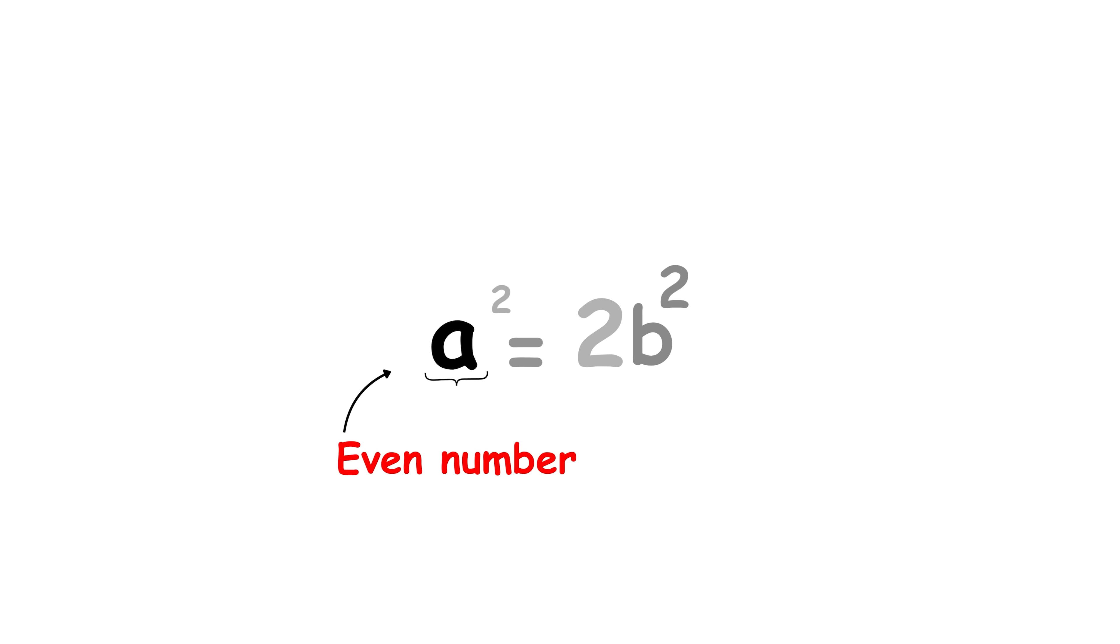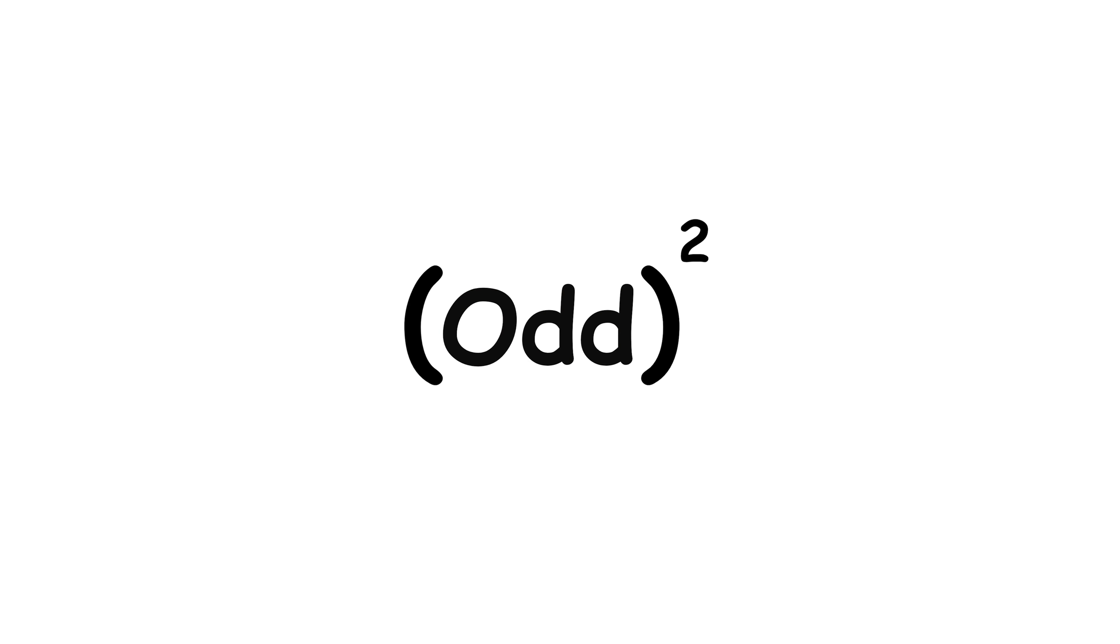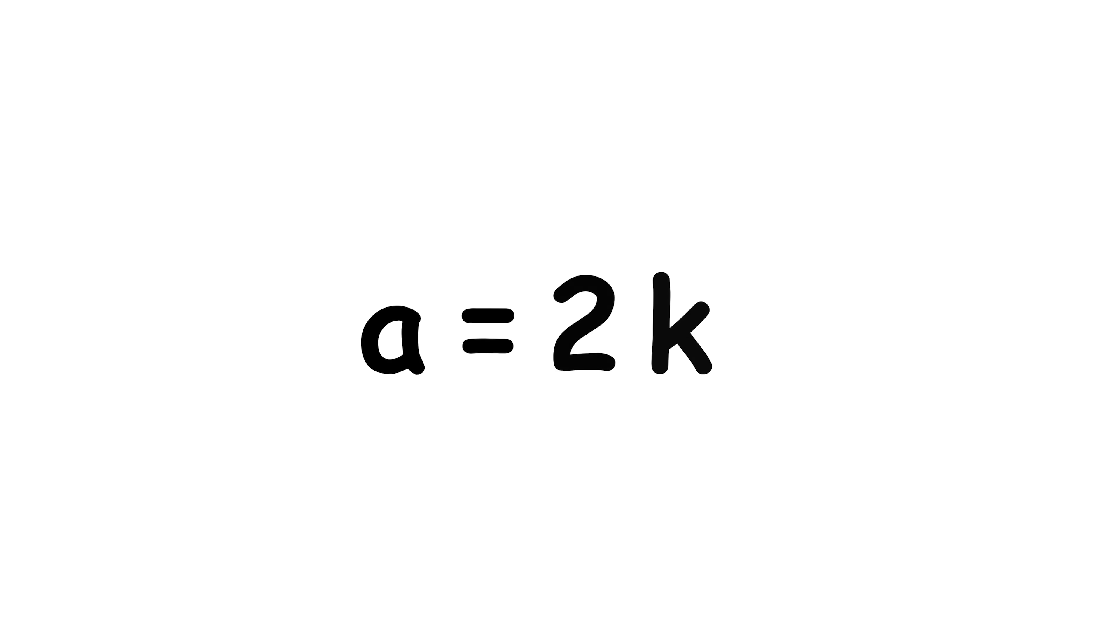Thus, a itself is even, because a whole number must be either odd or even, and the square of an odd number is odd. But if a is even, we can express it as 2 times another integer, which we can call k. Take a equals 2k, and substitute into a squared equals 2b squared: 2k squared equals 2b squared.